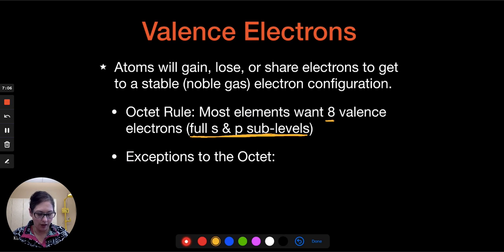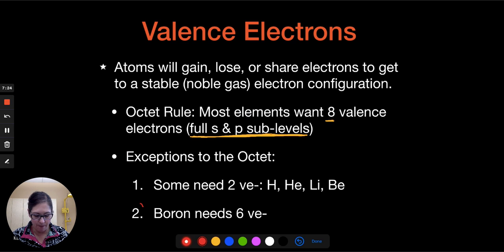Now the exceptions to the octet rule are anything that's going to only need 2 valence electrons. So hydrogen, helium, lithium, beryllium are all in that category. They want to be like helium. There's one other difference, and this one is different than all of the other ones, and that's that boron only needs 6 valence electrons. So those are the exceptions. A lot of times we have the general trend, and then we have some exceptions. So keep that in mind.